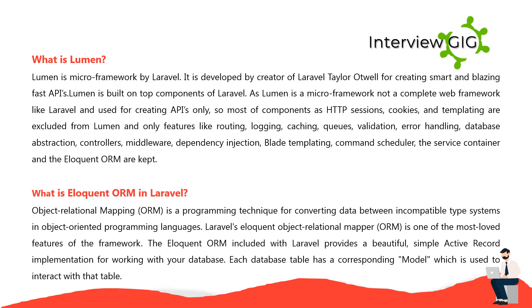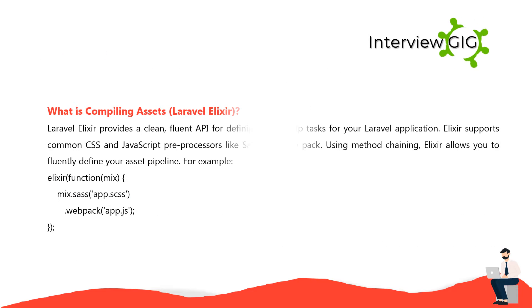What is Eloquent ORM in Laravel? Object Relational Mapping is a programming technique for converting data between incompatible type systems and object-oriented programming languages. Laravel's Eloquent ORM is one of the most loved features of the framework. It provides a beautiful, simple active record implementation for working with your database. Each database table has a corresponding model which is used to interact with that table.